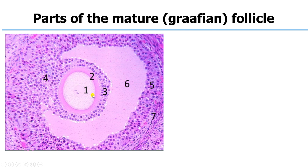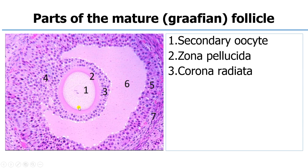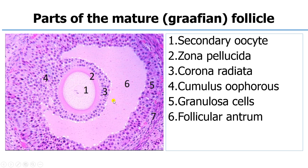What you are forming is the secondary oocyte. Then you have the zona pellucida. Then you have the corona radiata — the radiating crown — which is the same layer of follicular cells around the secondary oocyte. Then there is the cumulus oophorus, which basically means a cloud of cells around the oocyte. Then you have the layer of granulosa cells.